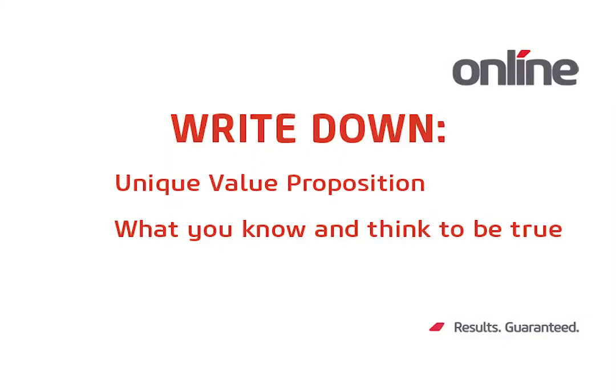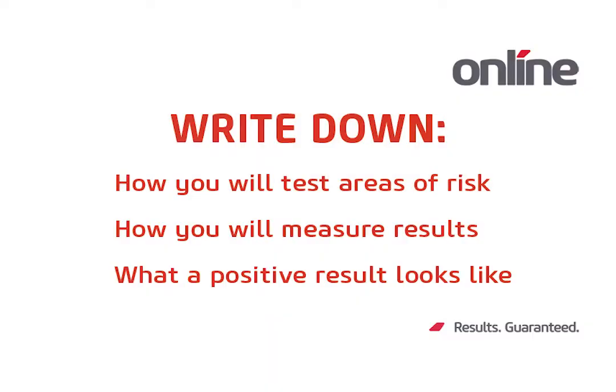And it starts with writing it down. Write down your UVP. Write down what you know to be true and what you think might be true. Highlight the areas that will cause you the biggest risk if you're wrong. Now write down how you're going to test those to make sure that they'll work or not work — let's prove it now. Write down how you're going to measure those results. Write down what a positive result looks like. Then conduct the test and evaluate.